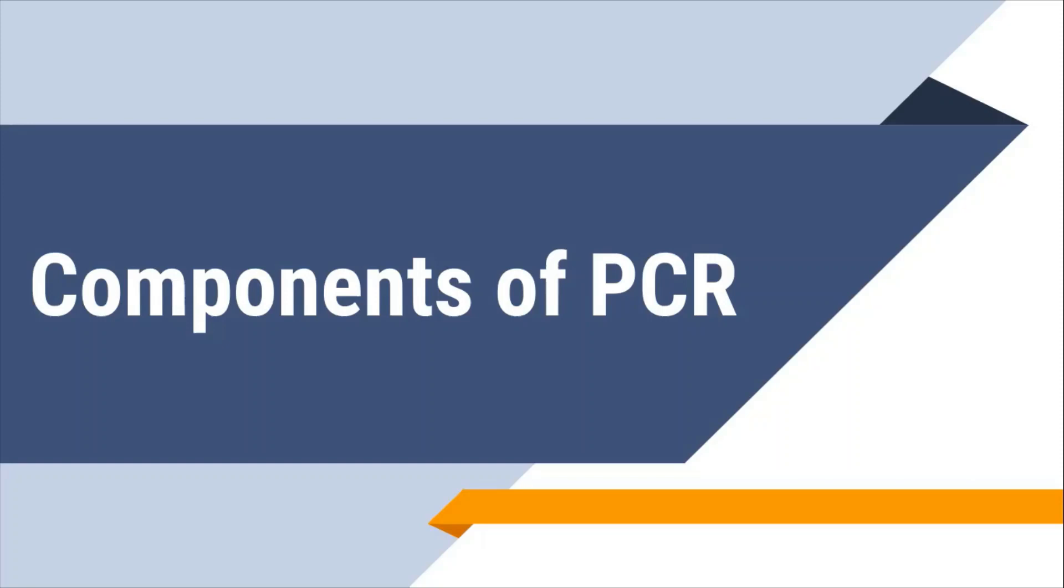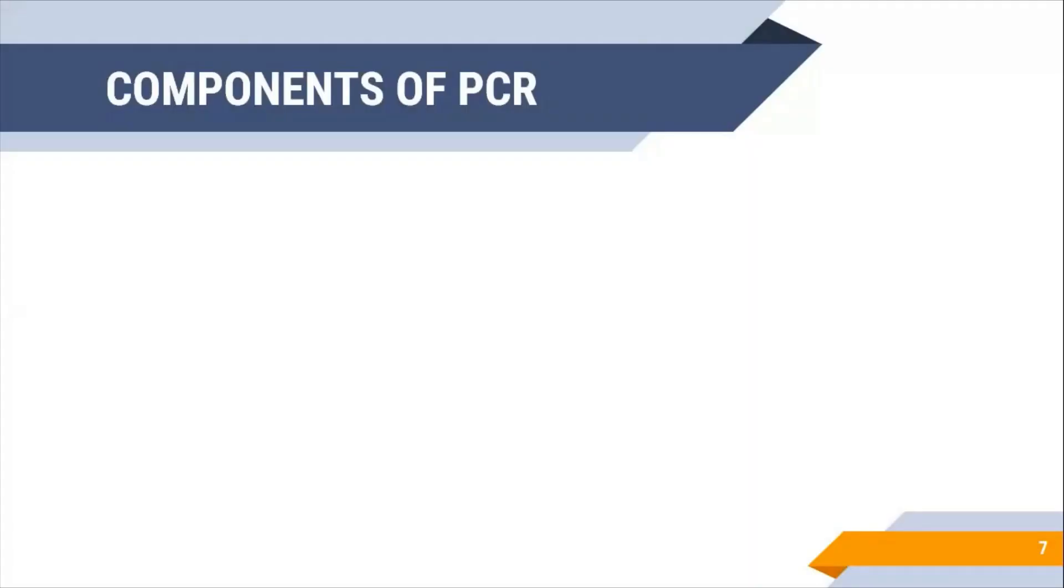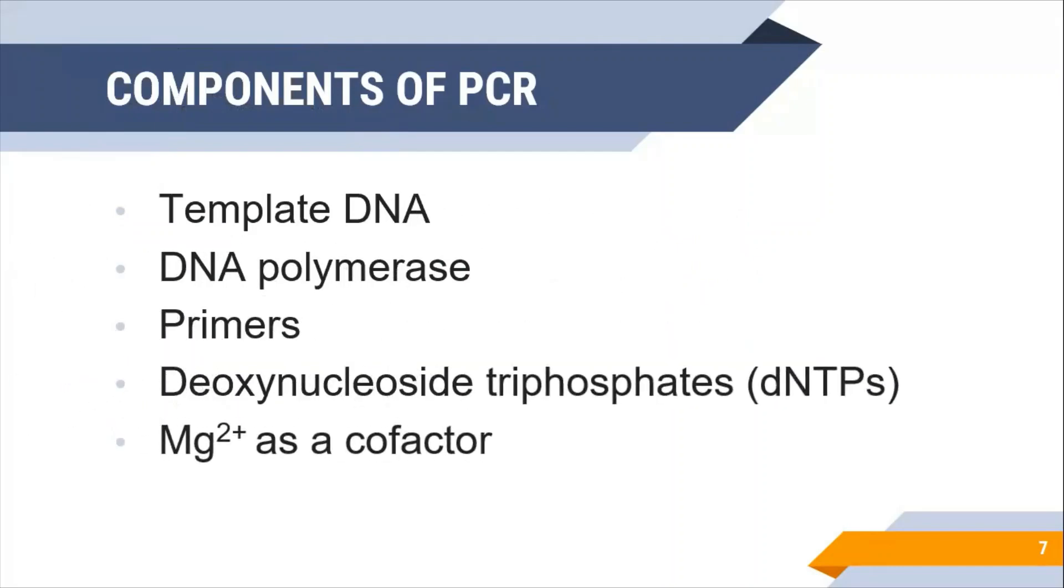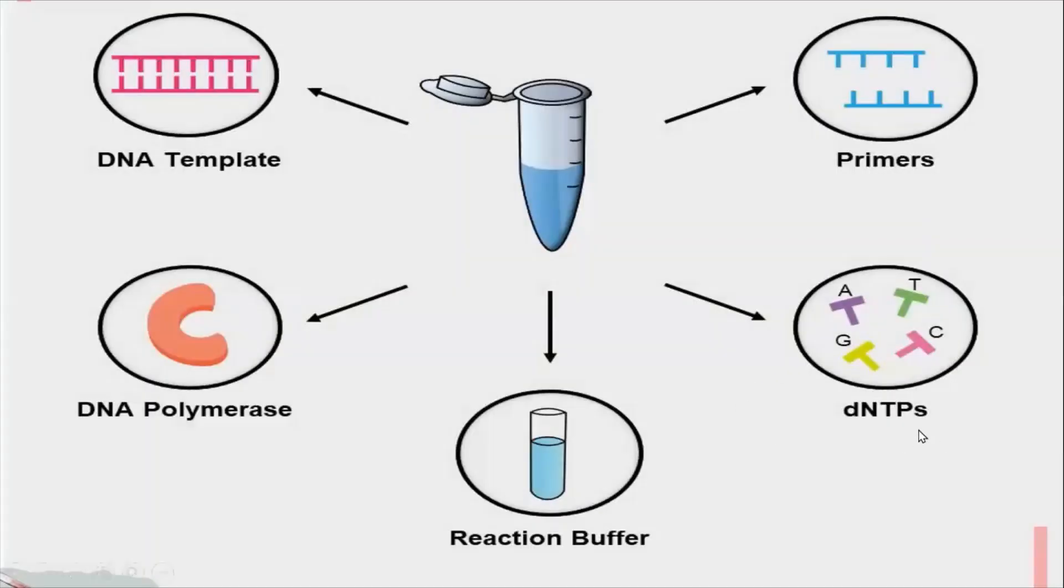Let's start. Components of PCR. In PCR we use six main components that we need while doing PCR. First is template DNA, second is DNA polymerase, third is primers, fourth is dNTPs, fifth is magnesium ions, and sixth is buffer. These are the main components. Let's discuss all these components in detail one by one.